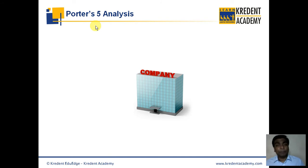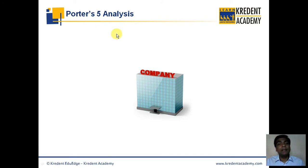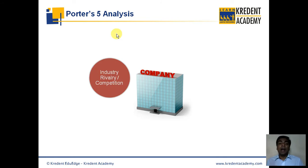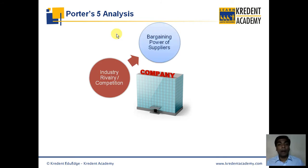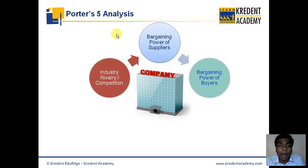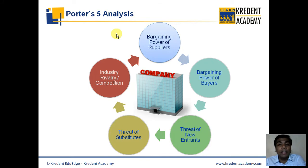He said that to understand the fundamental standing of any particular company, it is vital to look into five parameters. He identified these five factors as: industry rivalry or competition, the bargaining power of suppliers, the bargaining power of buyers, the threat of new entrants, and the threat of substitutes.